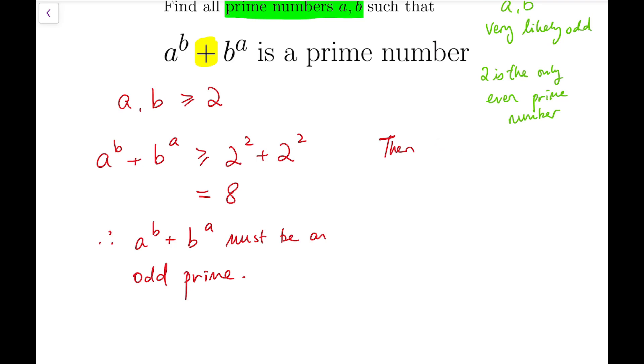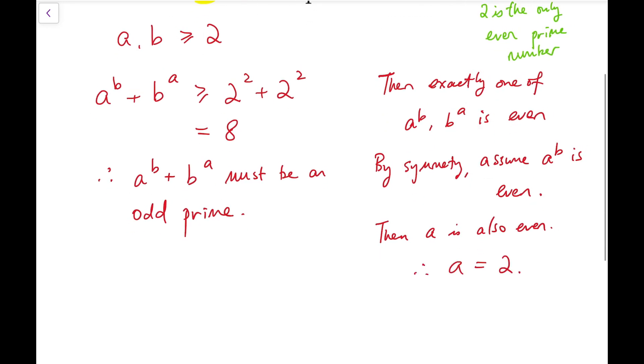So let me write it here. Then, exactly one of them. Then I can further assume that by symmetry, the power of A is even. So let's assume that A to the power of B is even. Now, the only possibility for that to happen is that A is also even. But this means A is an even number and also a prime number. So that means we know that A equals 2.